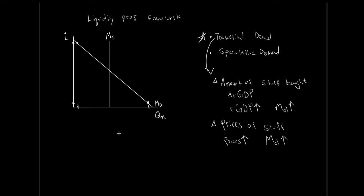We'll talk in upcoming videos about where the money supply curve sits — how much money is supplied and what that quantity is. For now we'll take it as exogenous, outside our system, and recognize that where money supply and money demand intersect we get our equilibrium interest rate and our equilibrium quantity of money — the amount of money being demanded equals the amount of money being supplied.